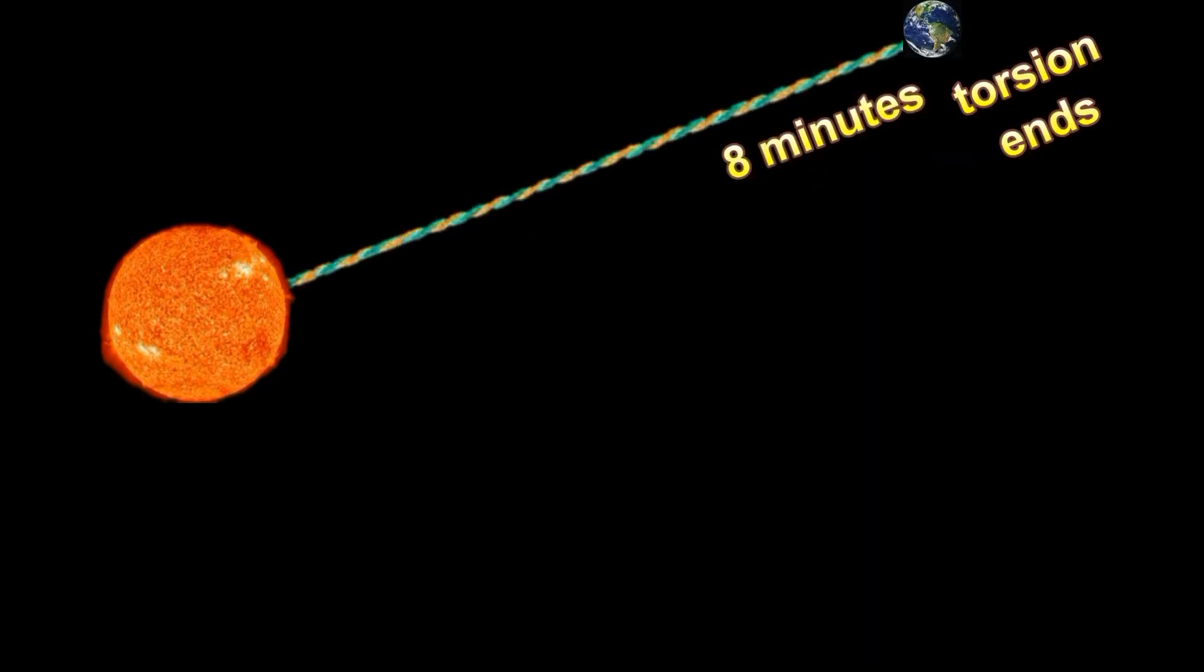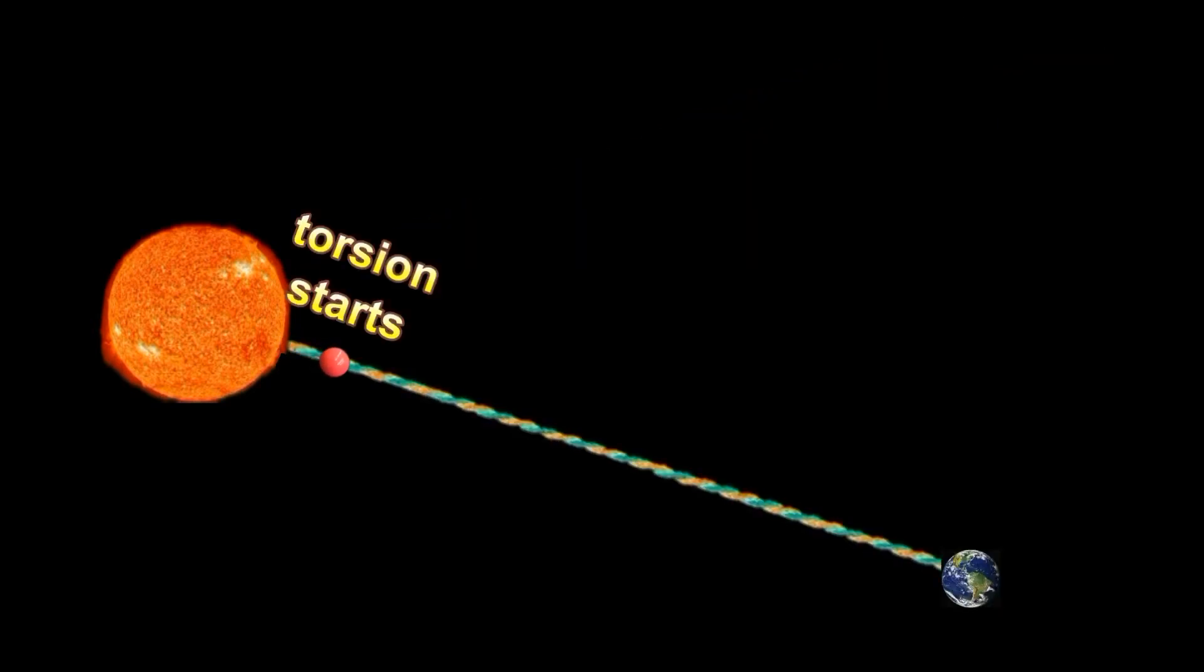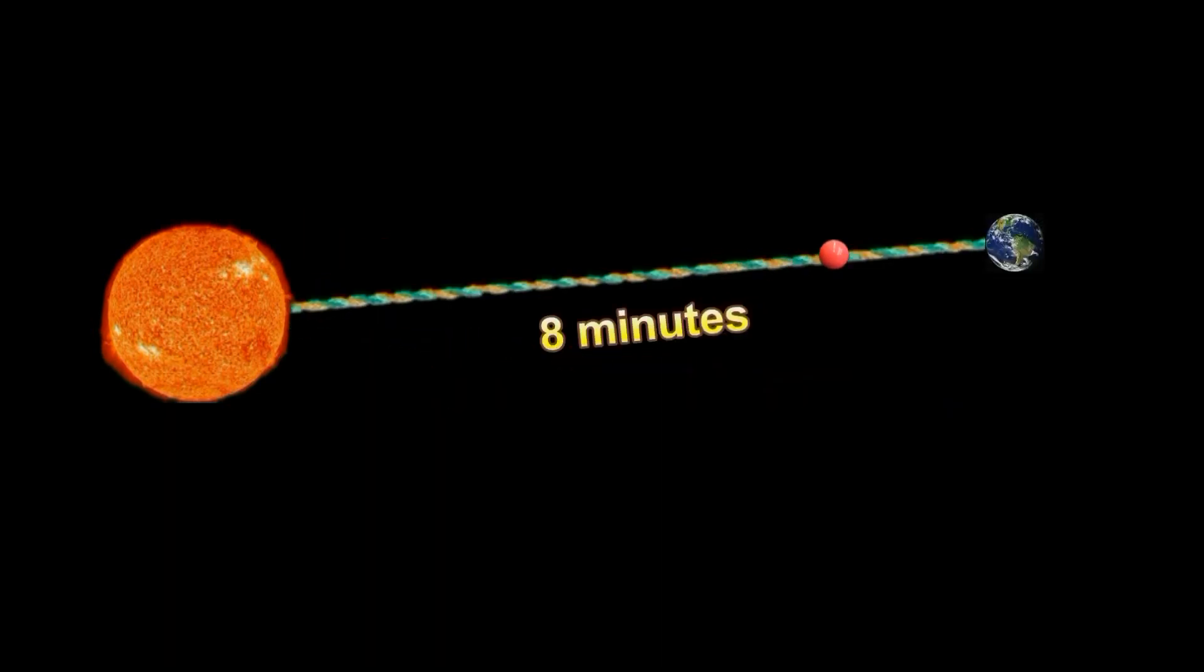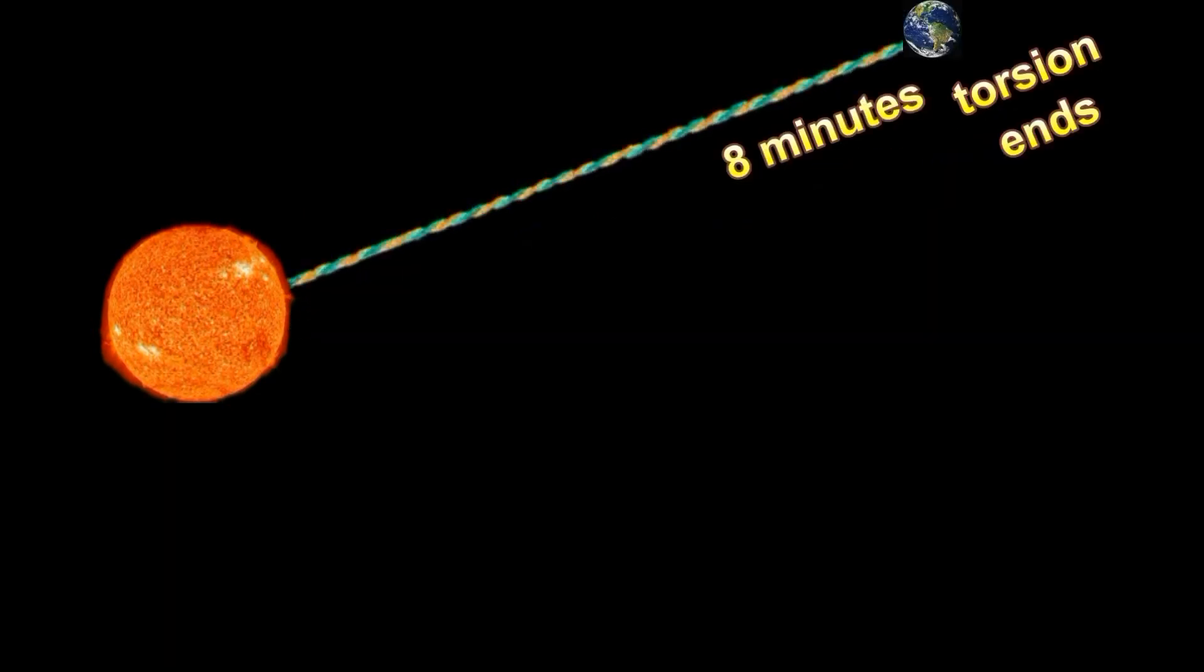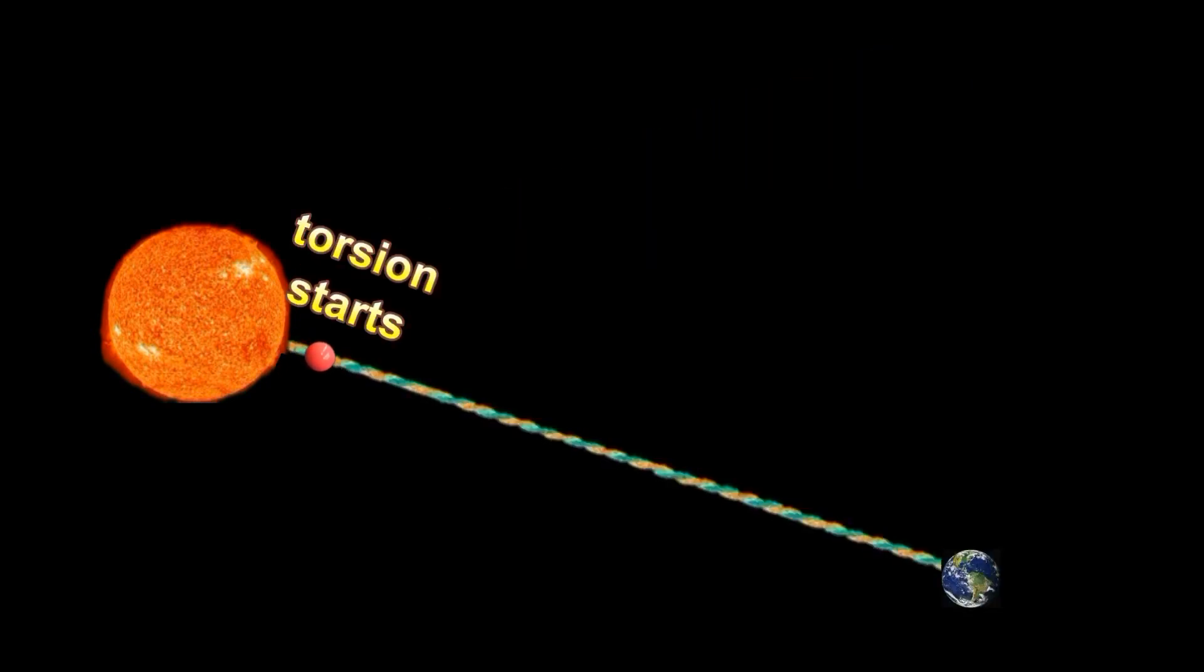Here, we simulate the trajectory of this pulse imparted on the rope by the atom in the sun with a ball. You can readily understand now why the mathematical physicists confuse this propagating segment of the rope with a discrete particle which they call photon.